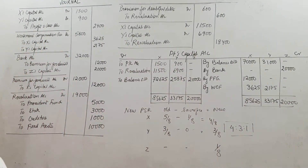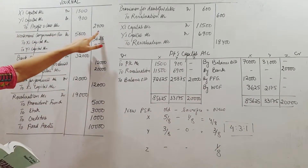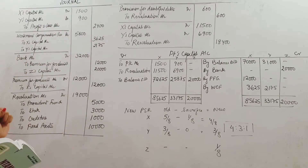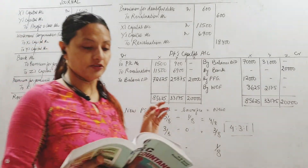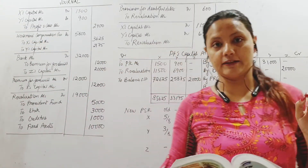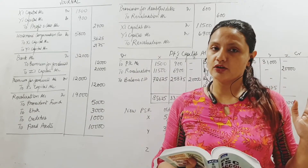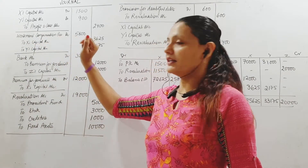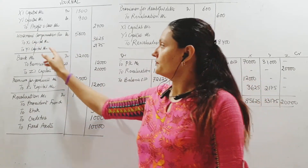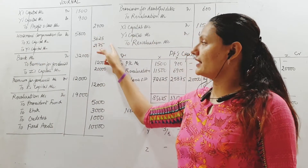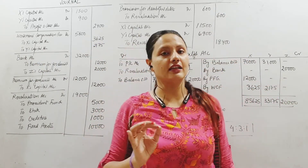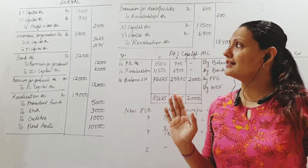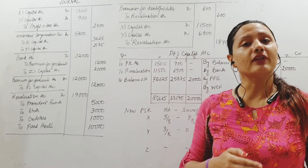First, to write off the profit and loss account — credit profit and loss account so it gets closed. This has been distributed to X's capital and Y's capital in their profit sharing ratio, which is 5:3. They are debited with the share of loss. Then workman's compensation reserve — debit the entire 5,800 to X's capital and Y's capital, again in the old ratio. All of this is in the old ratio because these relate to the period before admission.